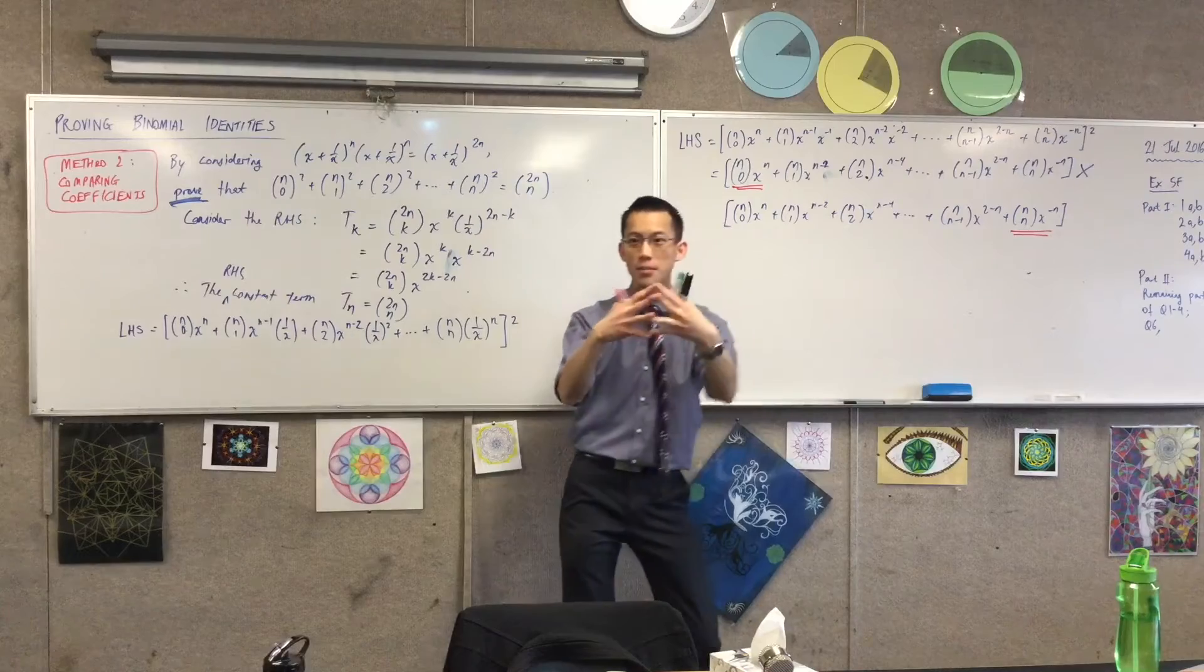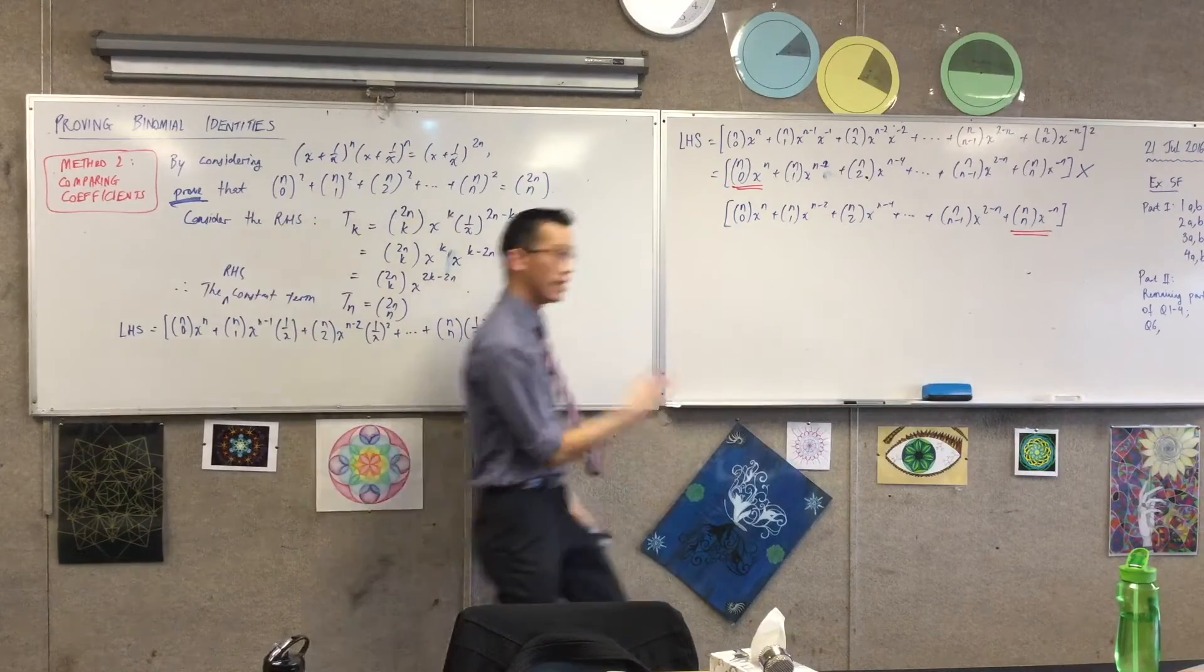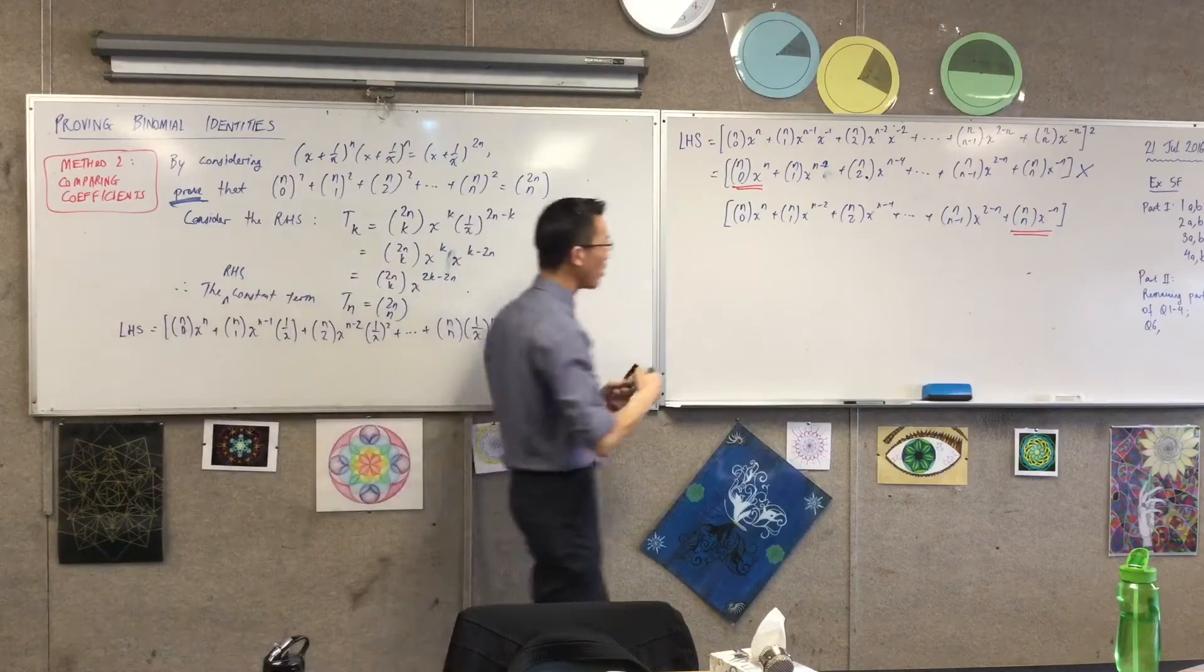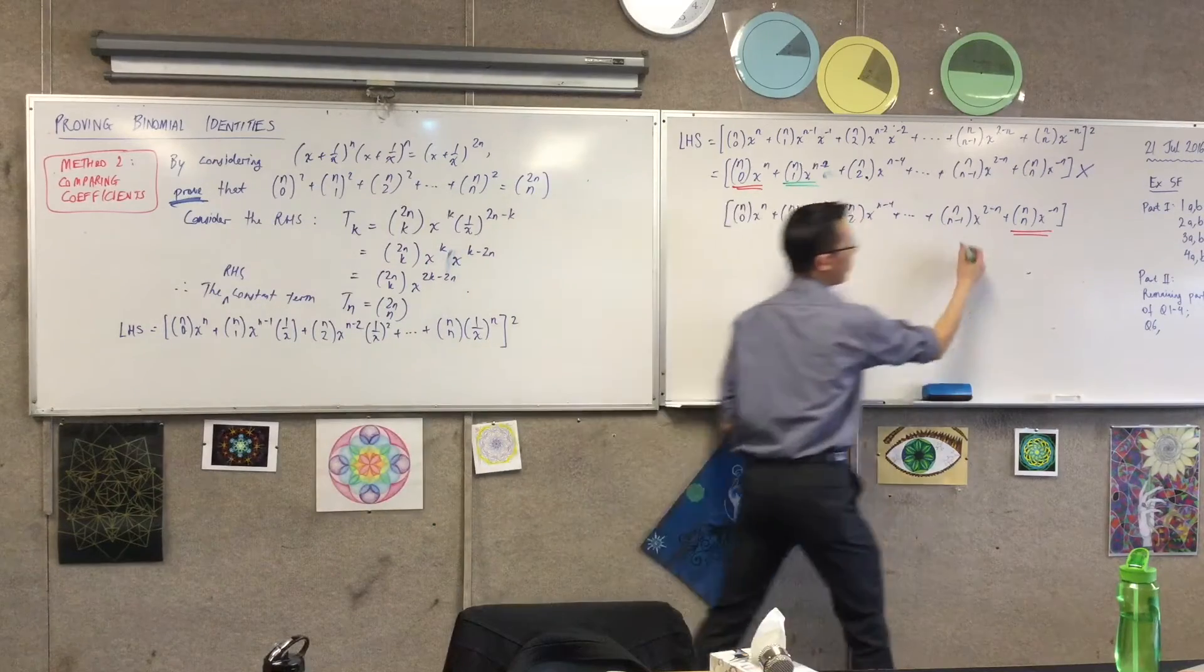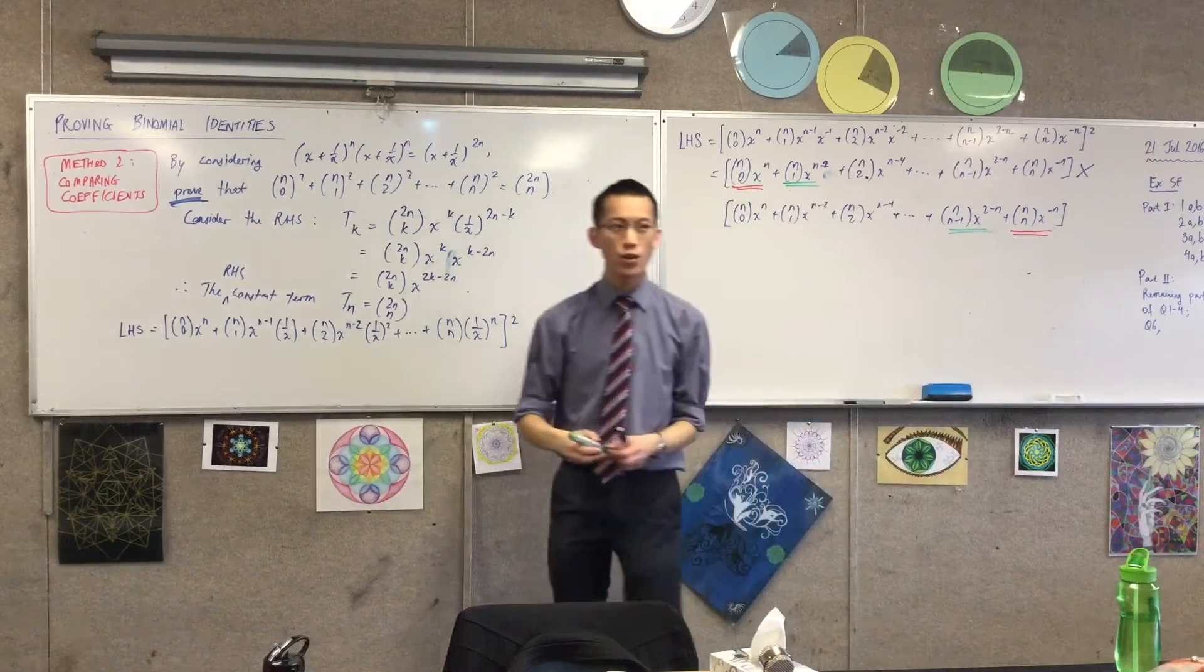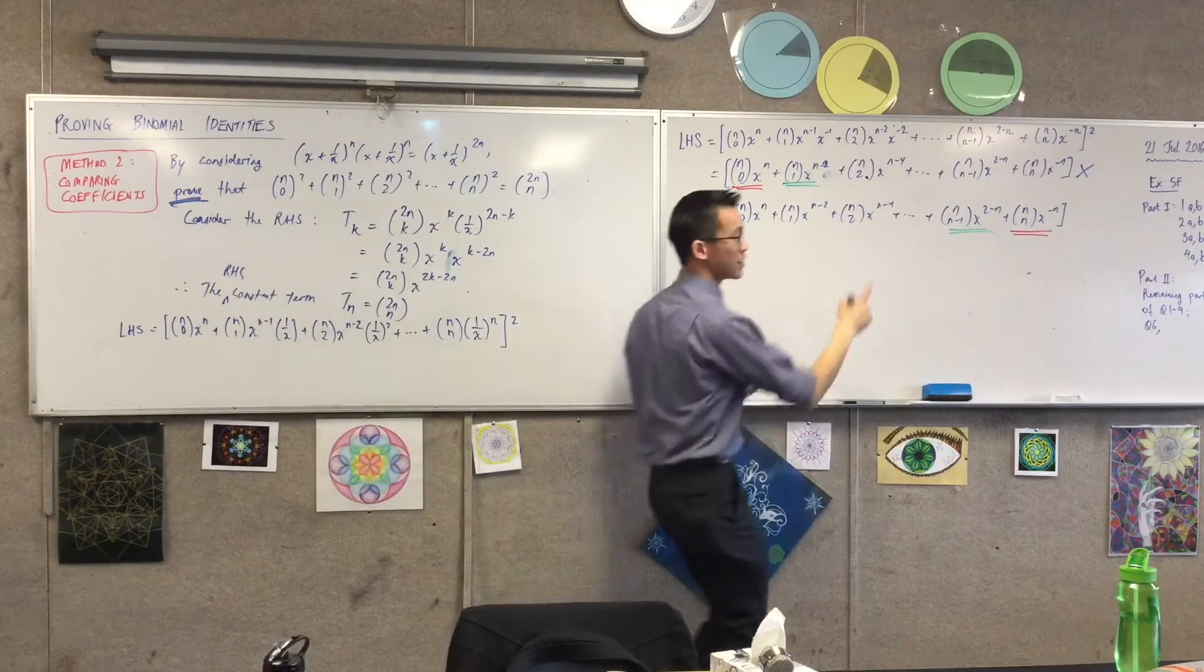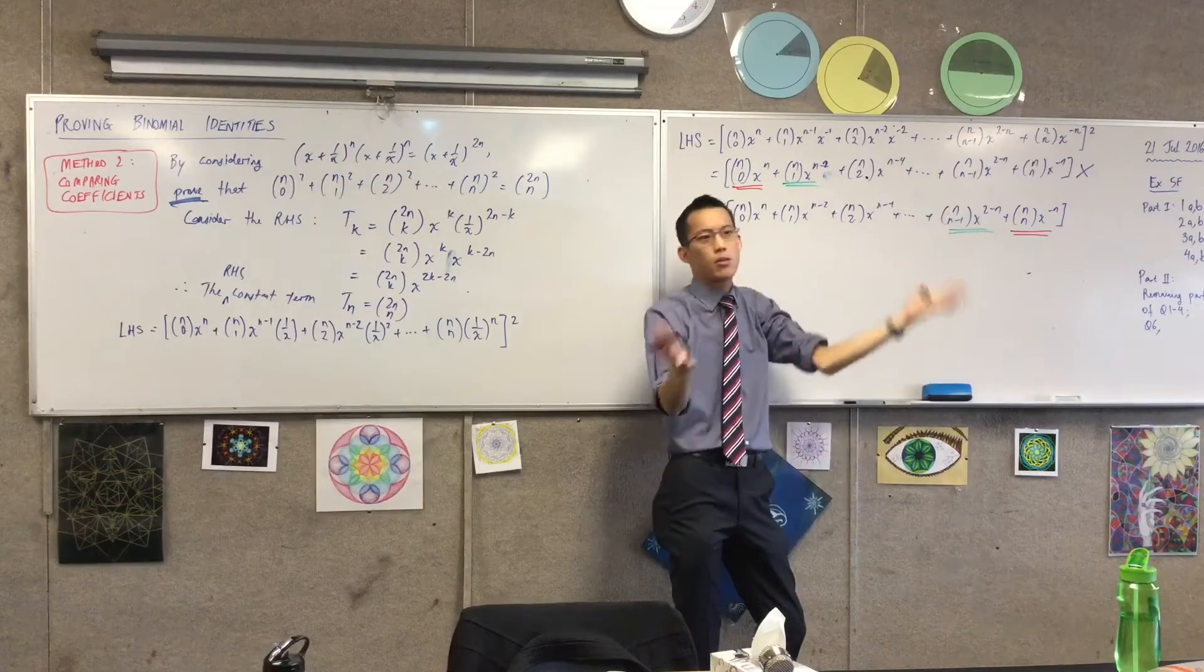That guy and that guy, when they come together the x's will all cancel, leaving you with a constant term. But it's not the only one. This guy will also pair with this guy and give you a constant term.